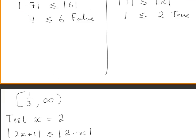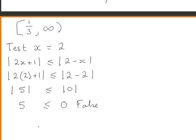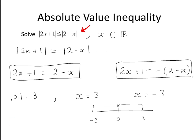We write our answer as x is between minus 3 and one third, including both endpoints. Only values of x between minus 3 and one third, when substituted back into the original inequality, satisfy the inequality.